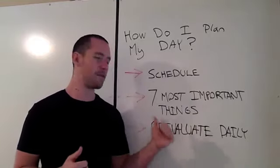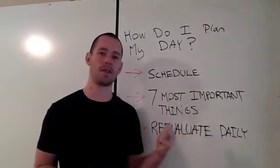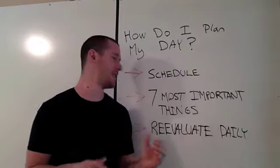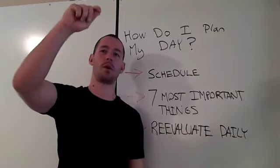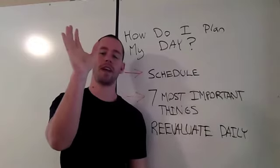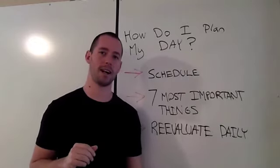And so what I do is I make a list of usually about the seven most important things that I need to get done. So in the space between my schedule, I'll be working on my projects. And I take those seven things and I put them in order: one, two, three, four, five, six, seven. What is the one thing that is the most important thing I need to get done all the way down to the seventh most important thing I need to get done.